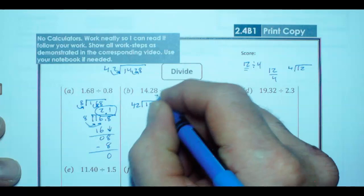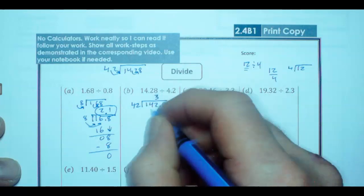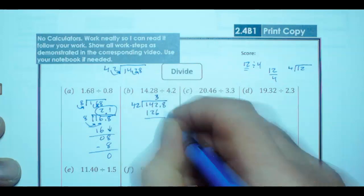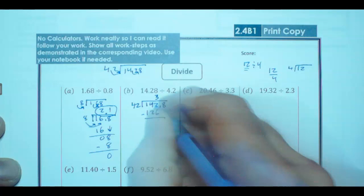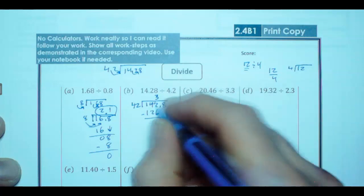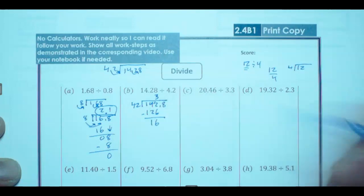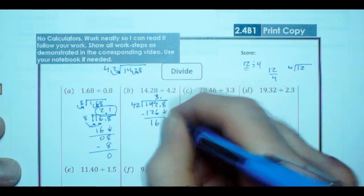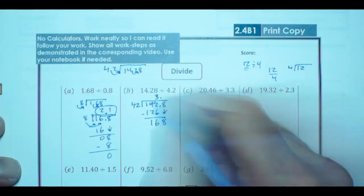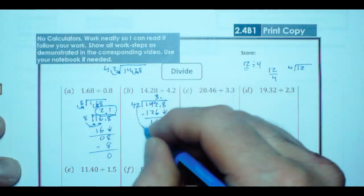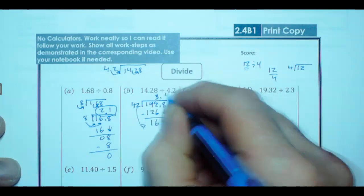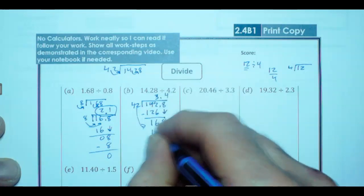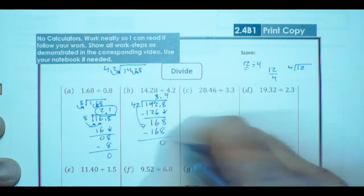Does 42 go into 142? It's going to go in there three times. Three times 40 would be 120. Three times 2 would be 6, so this would be 126. Subtract that out. 12 minus 6 is going to give me 6. This is a 3 minus 2 gives me 16. My decimal is going to be right there, so I'm just going to bring down this 8. How many will 42 fit into 168? It's actually going to go in there four times. Four times 40 is 160. Four times 2 is 8, so it's 168. Let's subtract that out. We zeroed that out.